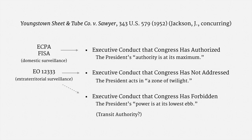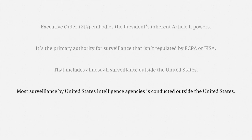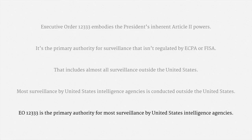So there's a roadmap through the separation of powers issues associated with foreign intelligence surveillance. To recap: Executive Order 12333 embodies the President's inherent Article II powers. It's the primary authority for surveillance that isn't regulated by the Electronic Communications Privacy Act or the Foreign Intelligence Surveillance Act — that includes almost all surveillance outside the United States. Most surveillance by United States intelligence agencies is conducted outside the United States, so Executive Order 12333 is the primary authority for most of that surveillance.